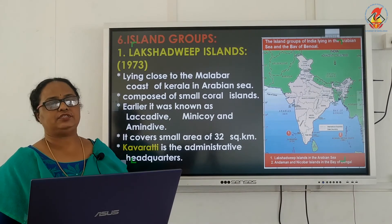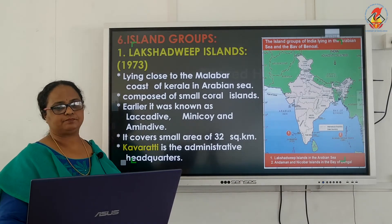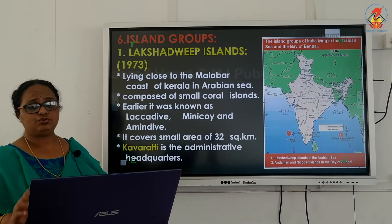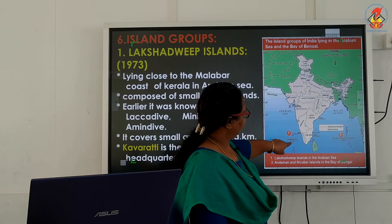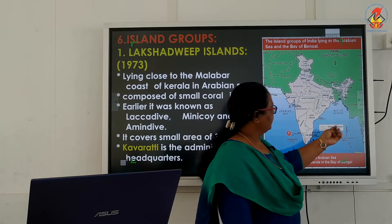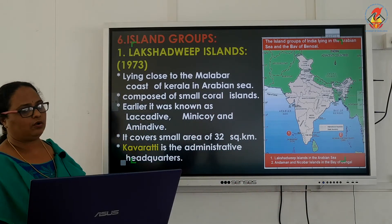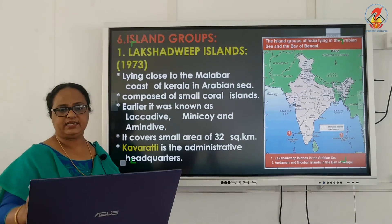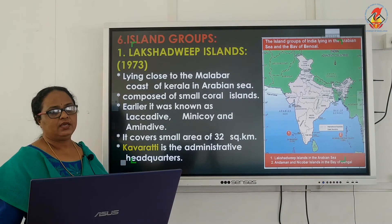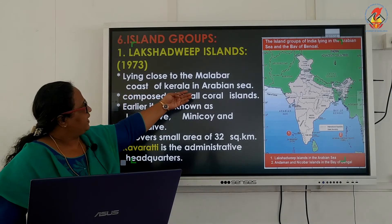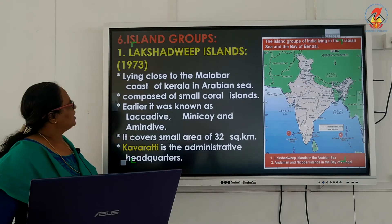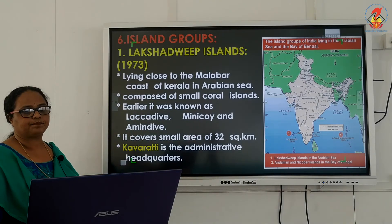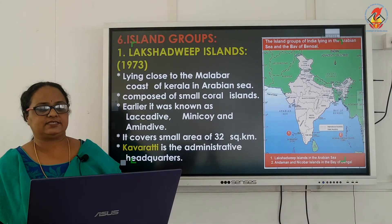India has two island groups: Lakshadweep and the Andaman and Nicobar Islands. Lakshadweep lies in the Arabian Sea, close to the Malabar coast of Kerala, and is composed of small coral islands.